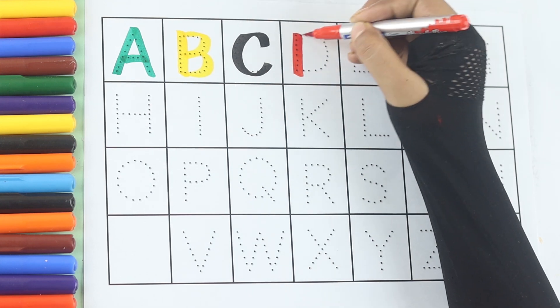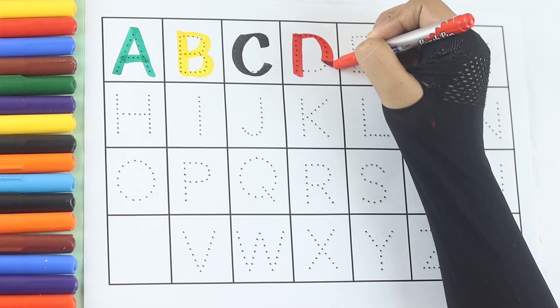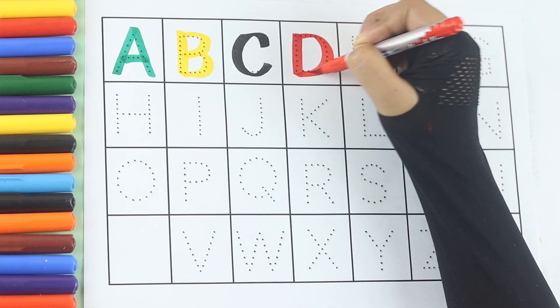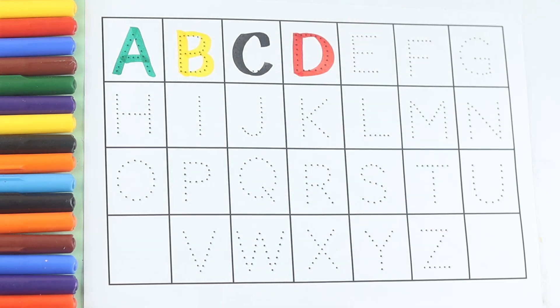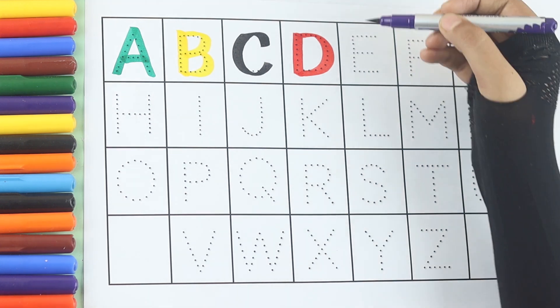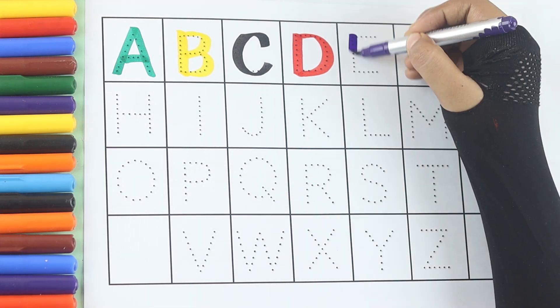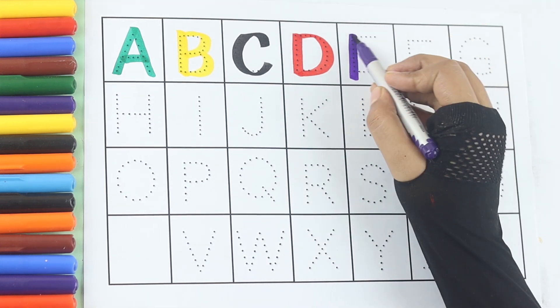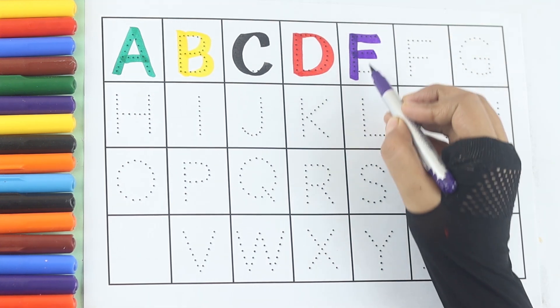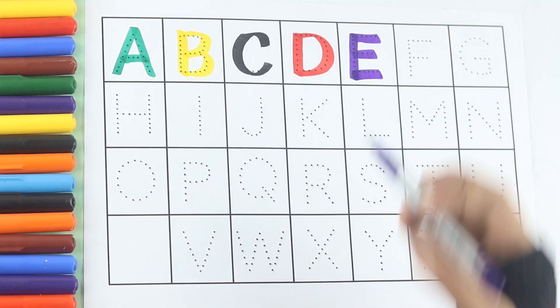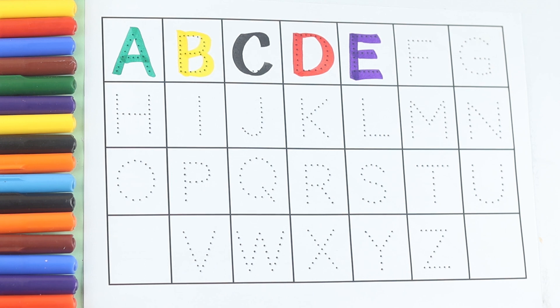Red color. D, D for dog, D for dog. Violet color. E, E for elephant, E for elephant.